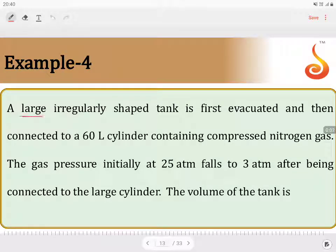A large irregularly shaped tank is first evacuated and then connected to a 60 liter cylinder containing compressed nitrogen gas. The gas pressure initially at 25 atmosphere falls to 3 atmosphere after being connected to the large cylinder. The volume of the tank is...